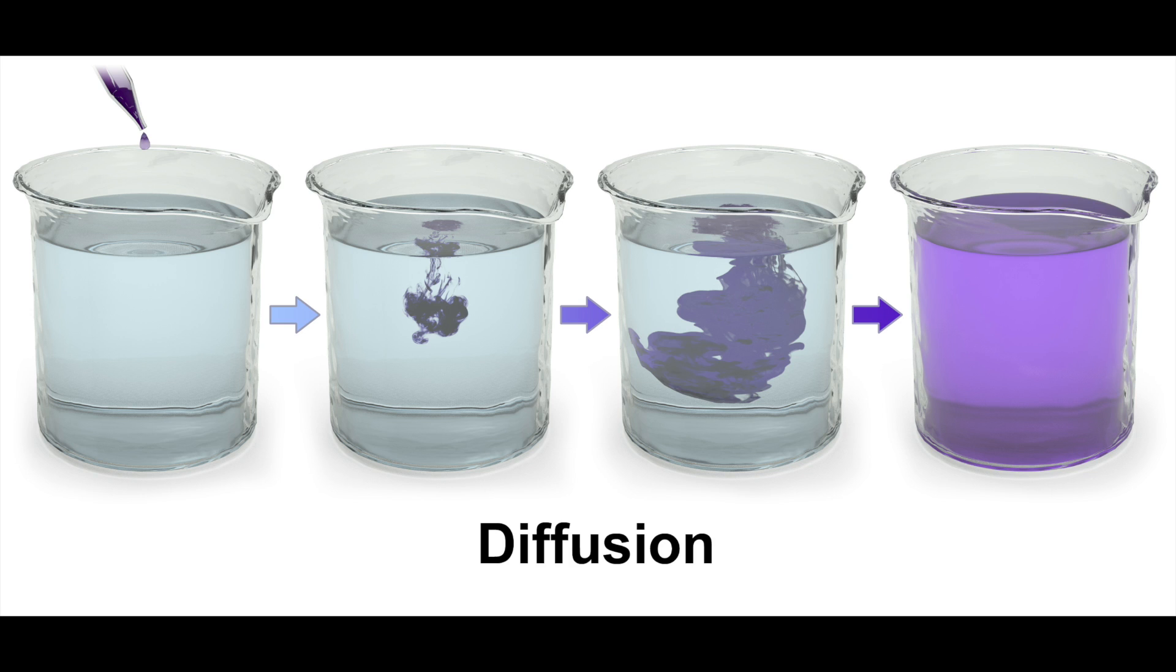Diffusion happens in gases or in solutions. For example, if I spray a deodorant can, the particles would have to diffuse into the air. You spray it and then it mixes up with the air.